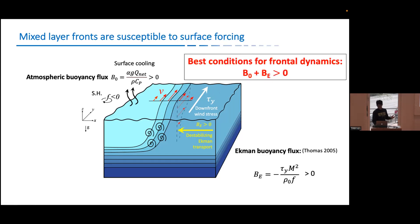So in summary, the best condition for frontal dynamics is when you have total buoyancy flux. By the way, I need to mention that to quantify this Ekman forcing, we can use this Ekman buoyancy flux, which is proposed by Thomas in 2005 paper. Basically, what you need is a downfront wind tau_y and then the lateral buoyancy gradient M². Then you can plug in all those constant here. You get your BE. If it's positive, then we are having downfront wind situation. If it's negative, then we have upfront wind, which the front would tend to be restratified. So we have the best condition if the total buoyancy flux B₀ plus BE is positive.